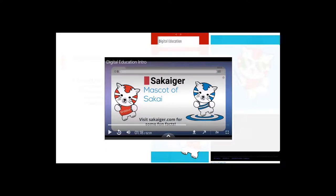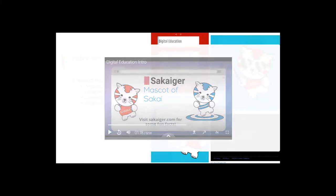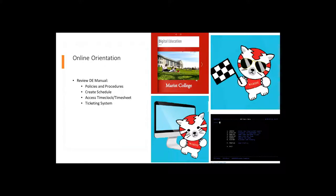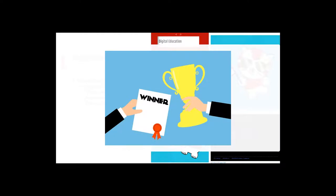Marist has branded Sakai as iLearn. Throughout the online orientation, students will notice the Sakaiager hidden or popping up in various locations, including the physical locations of our digital lab and staff offices. The student employees are instructed to keep track of how many Sakaiagers they find to earn different types of rewards, such as computer stickers and t-shirts, which were designed by a digital education student employee.